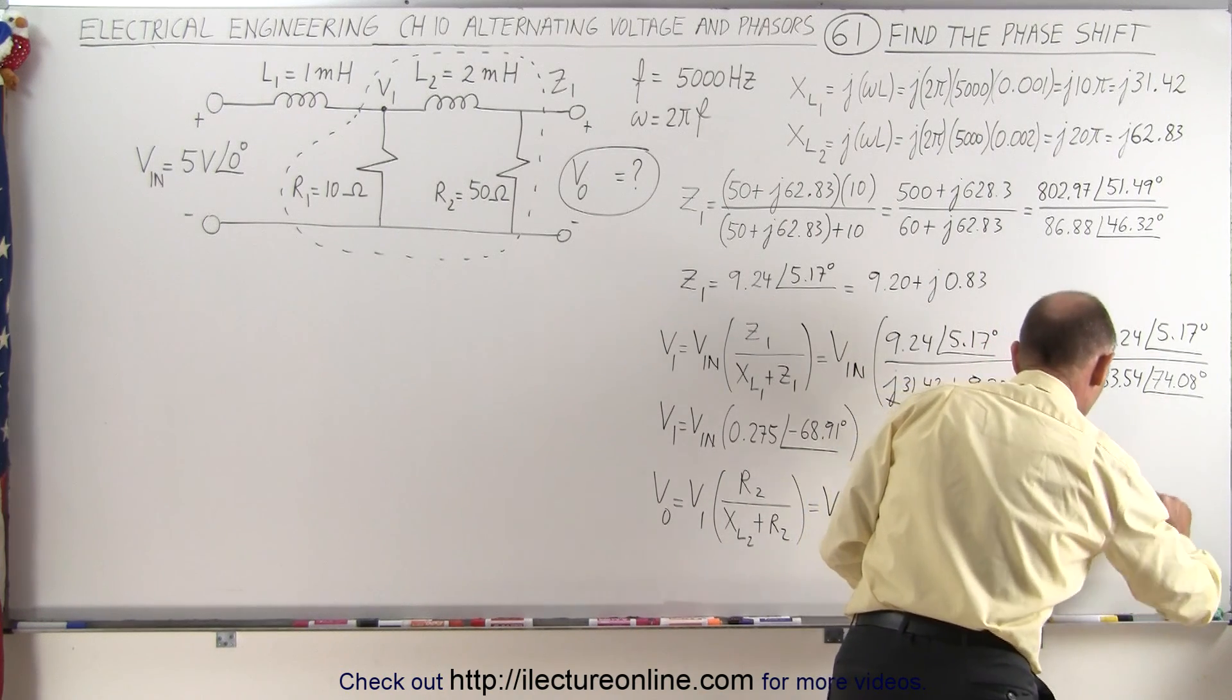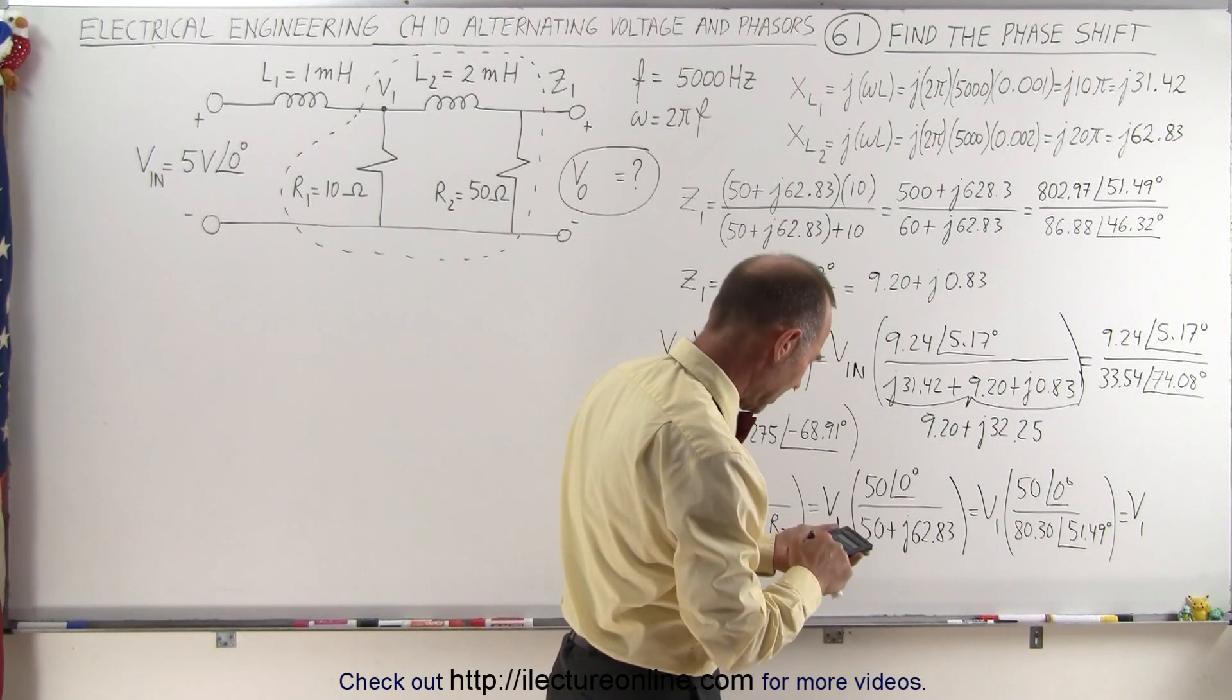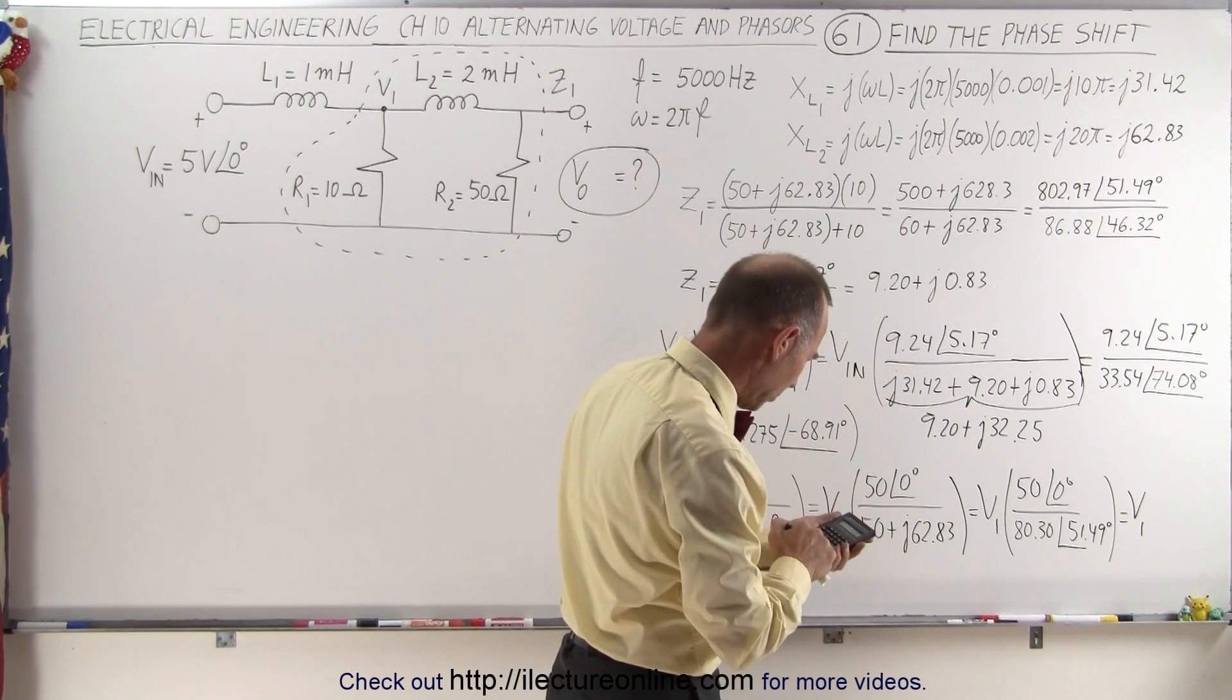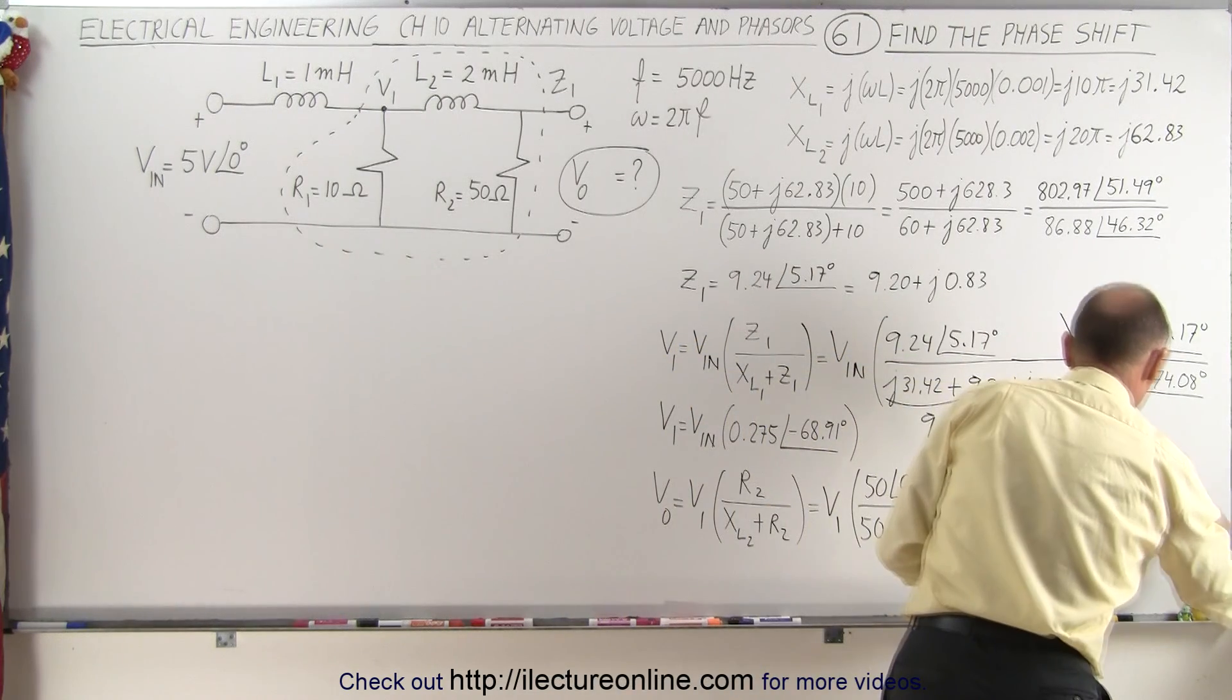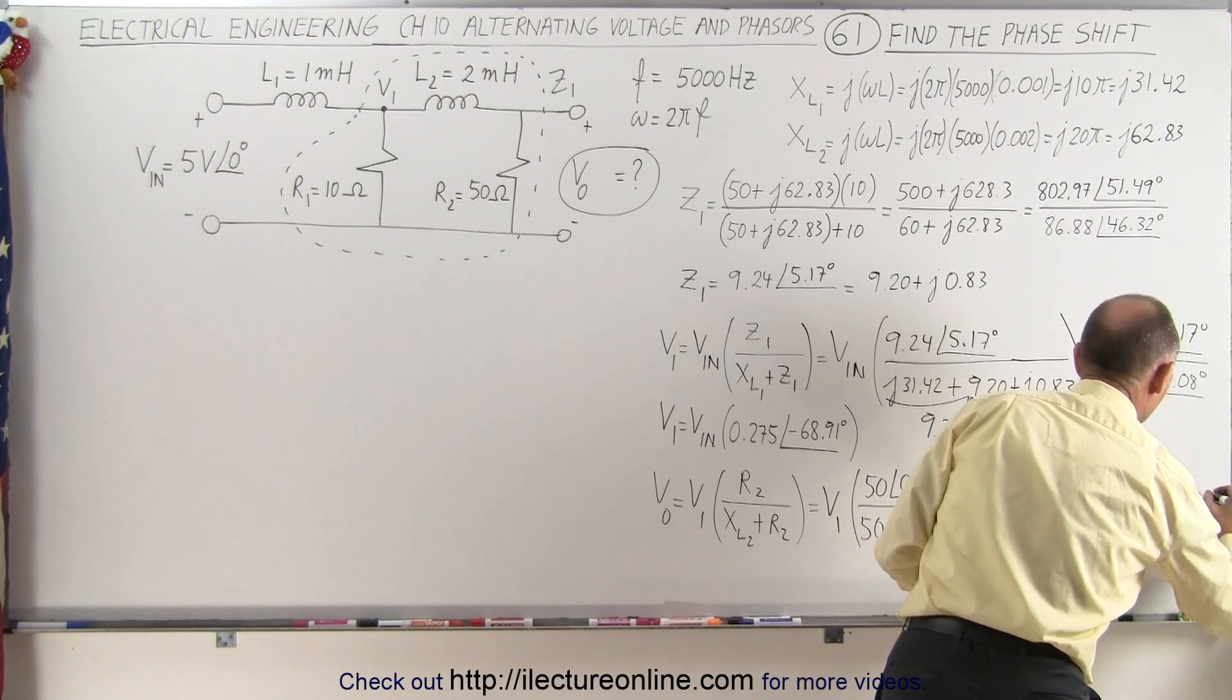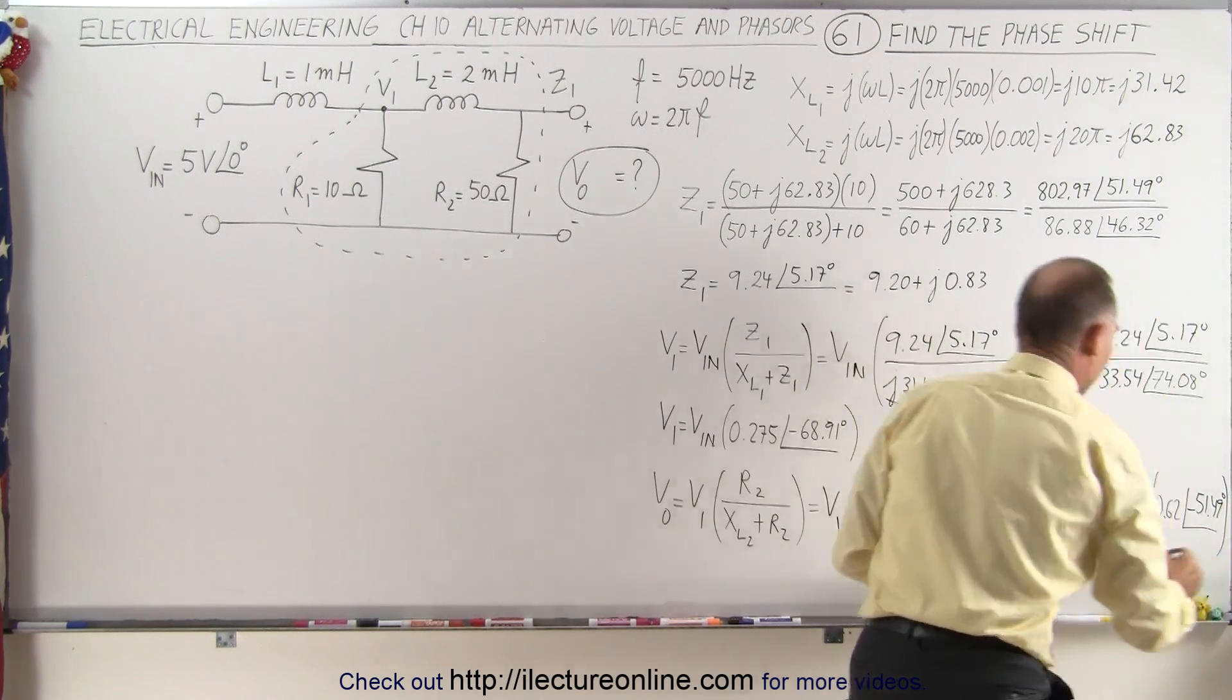Which equals V1, the magnitude, 50 divided by 80.3, that's 0.62 with a phase angle of minus 51.49 degrees.